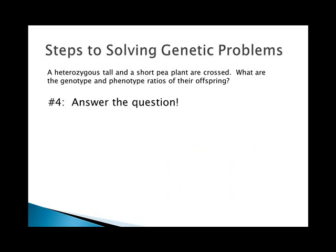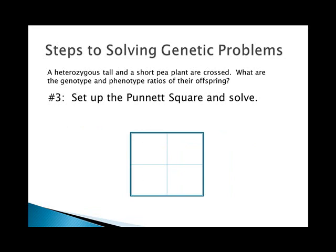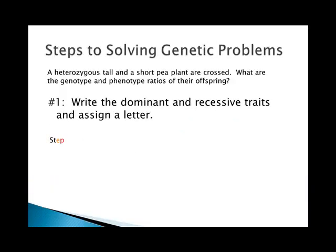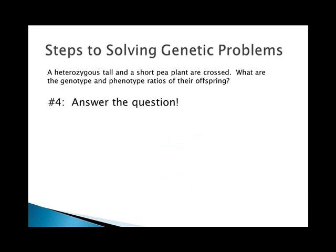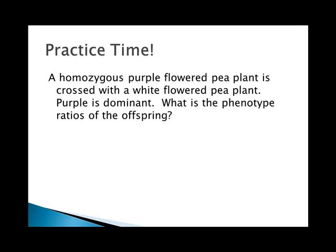For the phenotype ratios, you look back at step one — it tells you what those phenotypes are. Tall is anything with a big T, and short is anything with little t little t. So the phenotype ratios are two tall to two short.